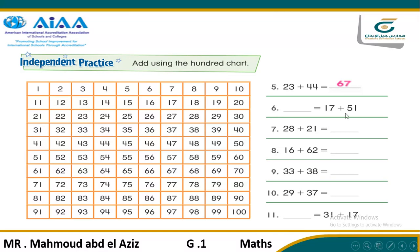Another question: 17 plus 51. By the way, we can start from any number here — you can start from 17 or 51. So we will start from 17. Plus 51. What's the number in the tens digit? It's 5. So we will go down 5 steps: 1, 2, 3, 4, and 5. So we are now at 67. And the ones digit is 1, so we will go one step ahead. So our answer would be 68.